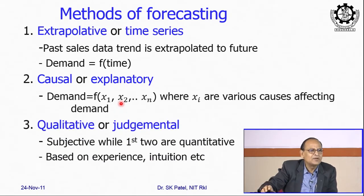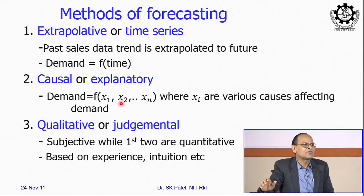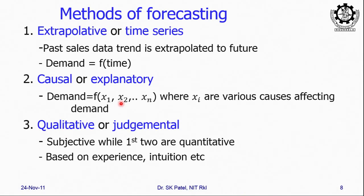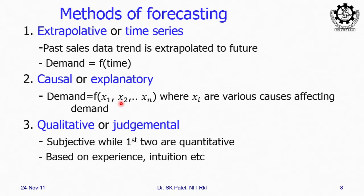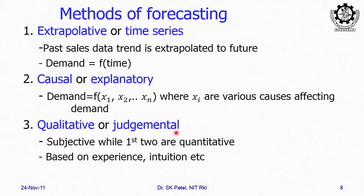The third category is totally based on experience — no data. From experience of working in the sales department and observing the demand pattern in the past, you can predict. This is all subjective, qualitative, or judgmental. The first two categories are quantitative; the third one is qualitative, based on experience.